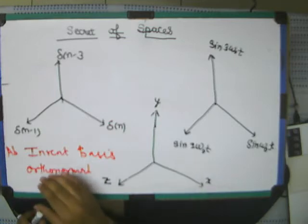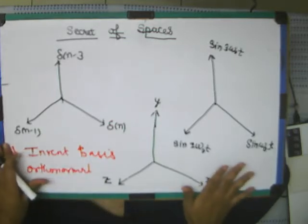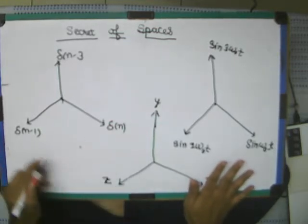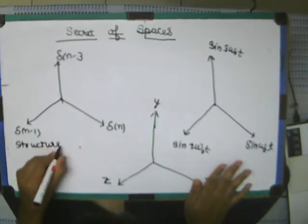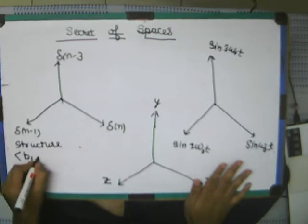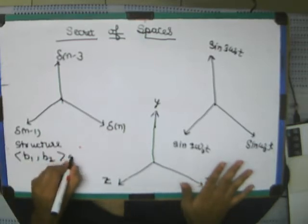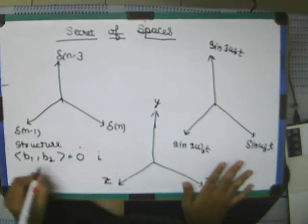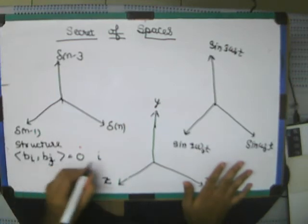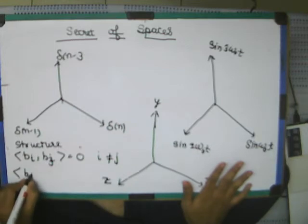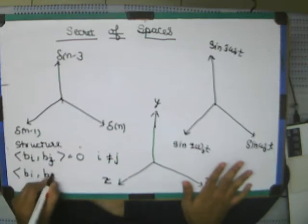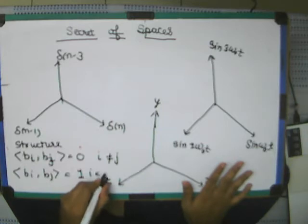The secret of spaces lie in ability to invent spaces. And the structure of such basis, the structure must be that every basis, basis 1, basis 2, must be 0 for all this basis. Let me tell, i, j, for all i, not equal to j. And they must be equal to, this basis, must be equal to 1 for i equal to j.